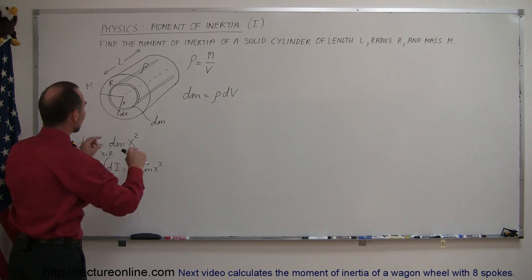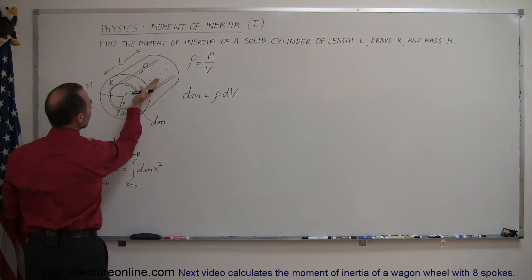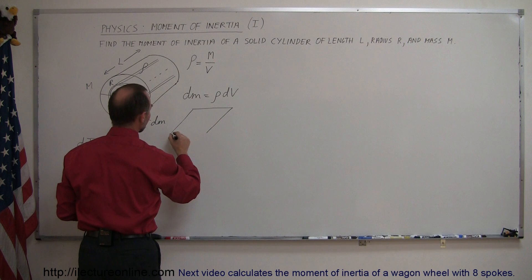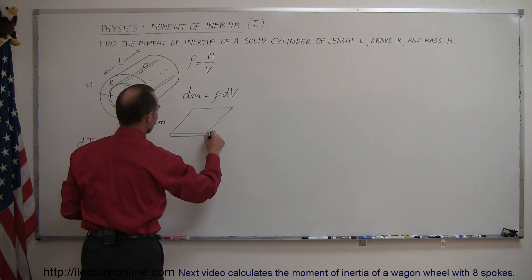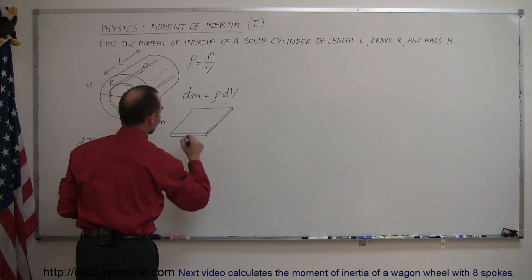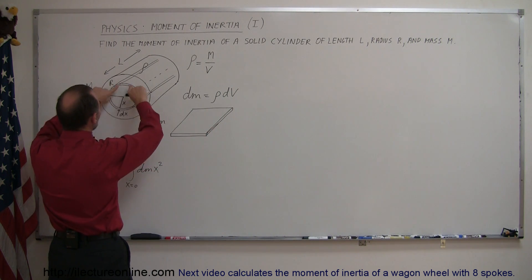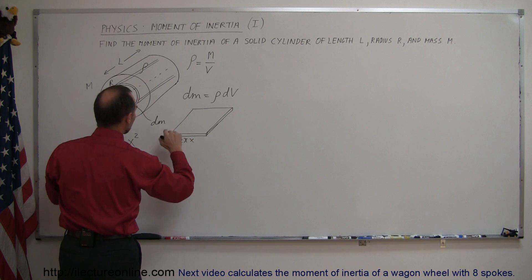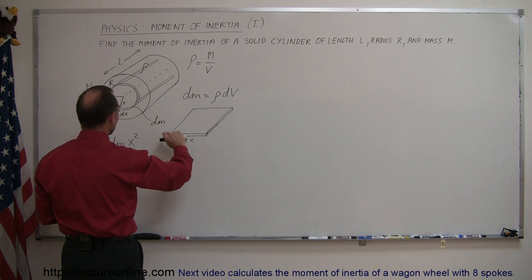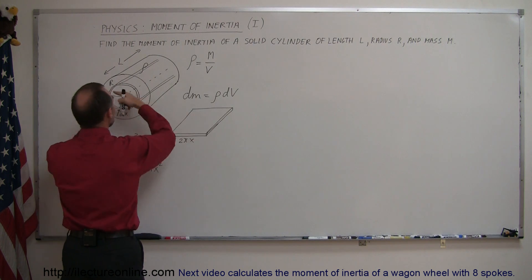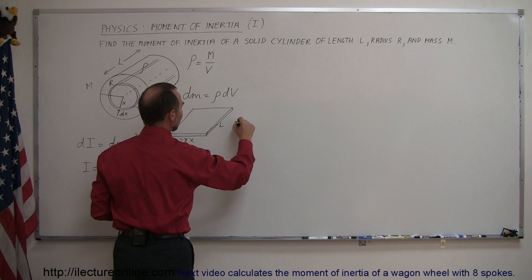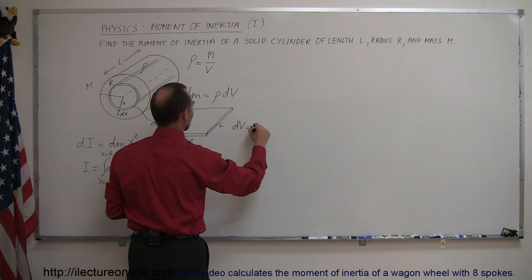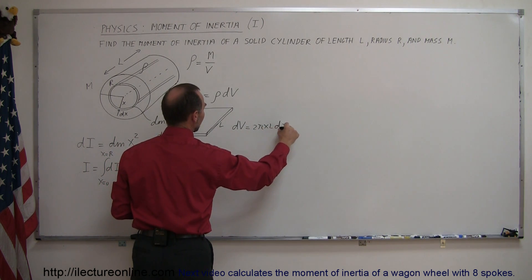What is the dV of that little shell? If we cut it with scissors and lay it flat, it becomes a thin strip. The circumference of the circle — which is 2πx — becomes one dimension, the thickness is dx, and the length of the strip is the length of the cylinder L. So dV equals 2πx times L times dx.